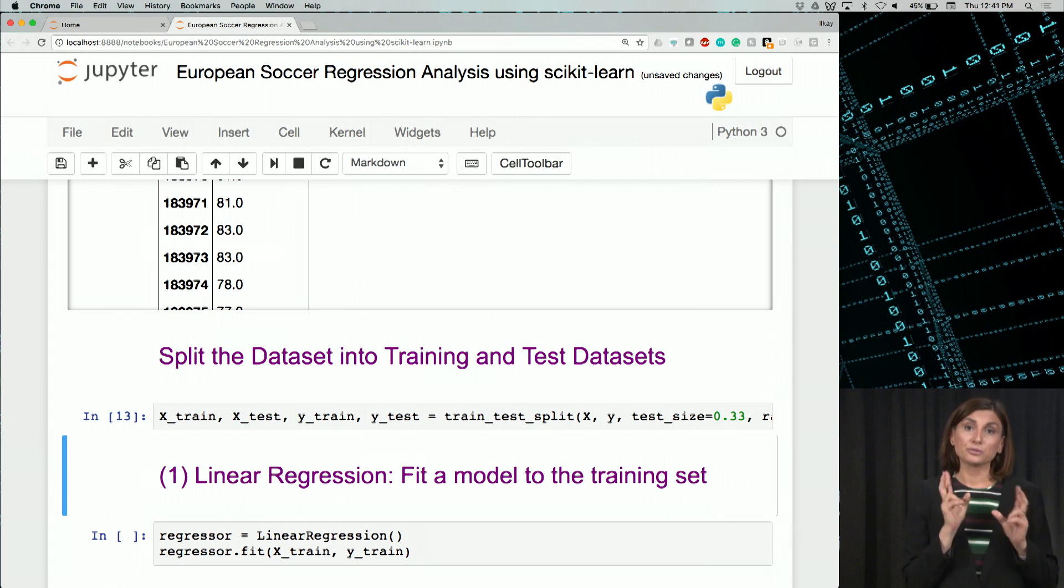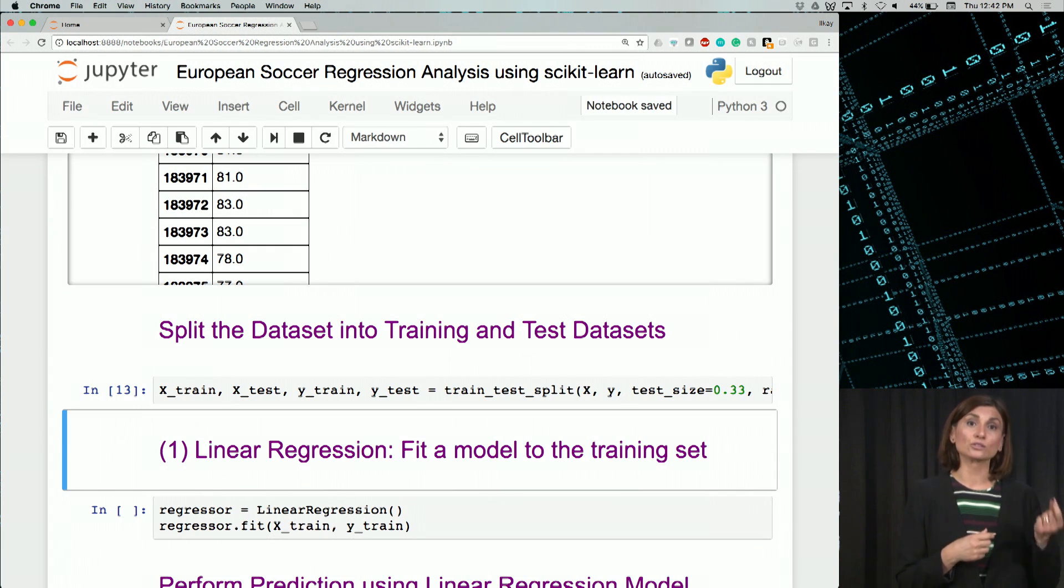We'll perform two different modeling operations using different regression techniques. First, we will use a linear regressor. We'll select the features and use a linear regressor to predict a player's overall rating.